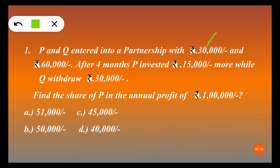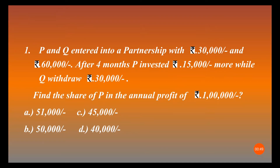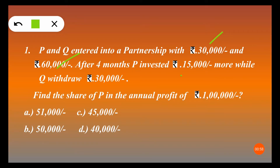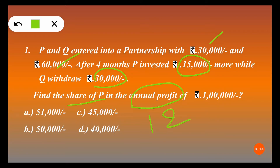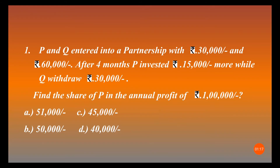P and Q entered into a partnership with 30,000 rupees and 60,000 rupees. After 4 months, P invested 15,000 rupees more while Q withdrew 30,000 rupees. Find the share of P in the annual profit of 1 lakh rupees. Annual profit means the business ran for 12 months. So the hint is given and the profit is 1 lakh rupees.